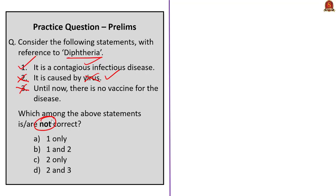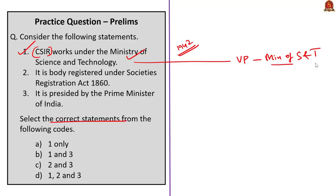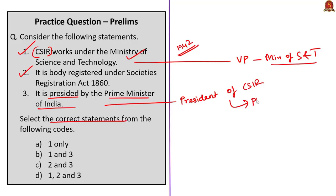This question is with reference to the Council of Scientific and Industrial Research (CSIR). Three statements are given. The first statement: CSIR works under the Ministry of Science and Technology — correct, it was established in 1942 and works under this ministry. The second statement: it is a body registered under the Societies Registration Act of 1860 — correct. The third statement: it is presided by the Prime Minister of India — correct; the President of CSIR is the Prime Minister. The correct answer is option D: one, two, and three.